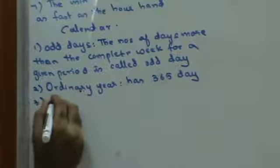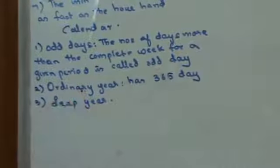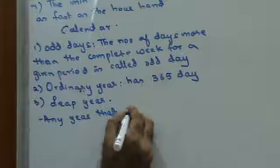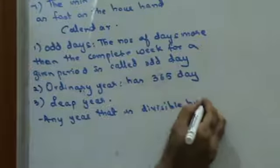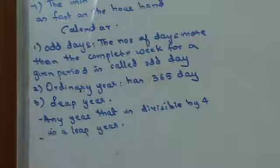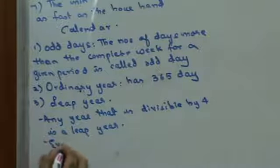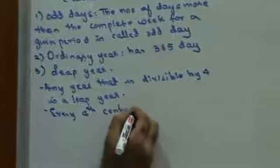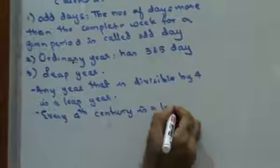Next, leap year. Any year which is divisible by four is a leap year. Every fourth century is a leap year. A leap year has 366 days.